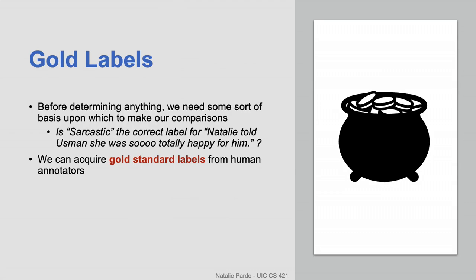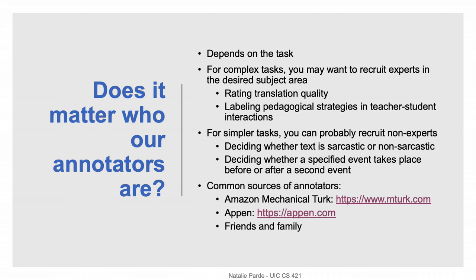However, before we can answer any of those questions, we need some sort of basis upon which to make our comparisons. For example, in this module we've talked a lot about sarcasm detection. In order to determine whether our predicted label of sarcastic for the test sentence is correct, we need to have a label from some sort of trusted source. We usually call these trusted labels the gold standard or true values.